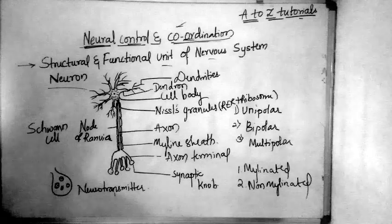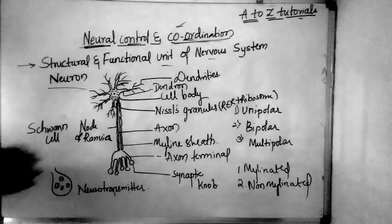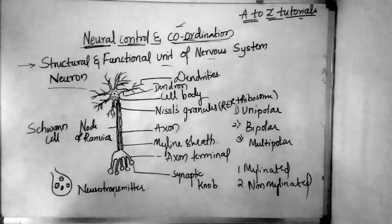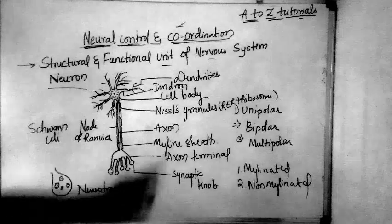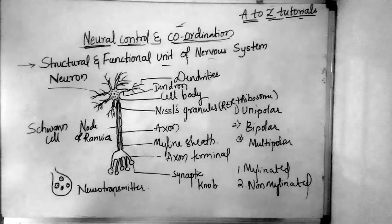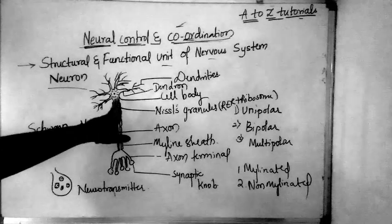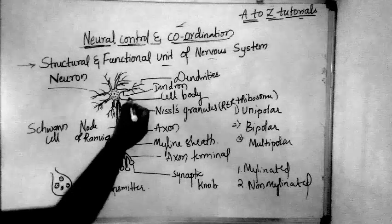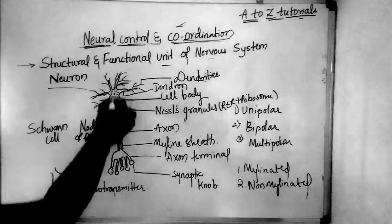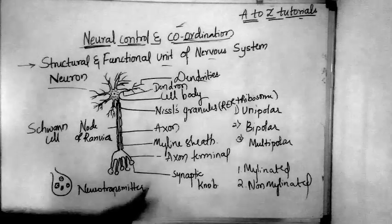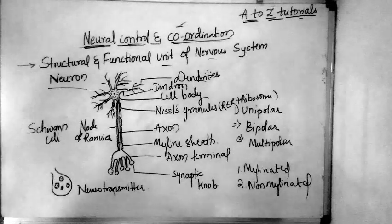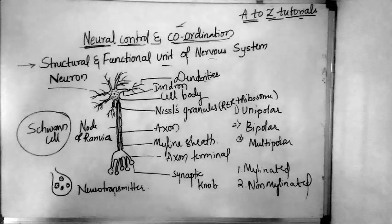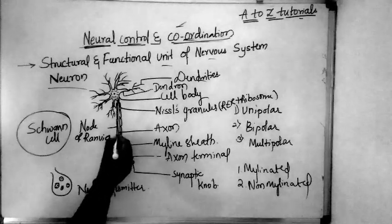To summarize the structure of the neuron: it has a cell body, a dendron, and an axon. The cell body consists of cytoplasm, cell organelles, and Nissel's granules — granules of RER and ribosomes. The short fiber projecting from the cell body is the dendron; its sub-branches are the dendrites. The long fiber that transmits impulses away from the cell body is the axon, surrounded by Schwann cells.